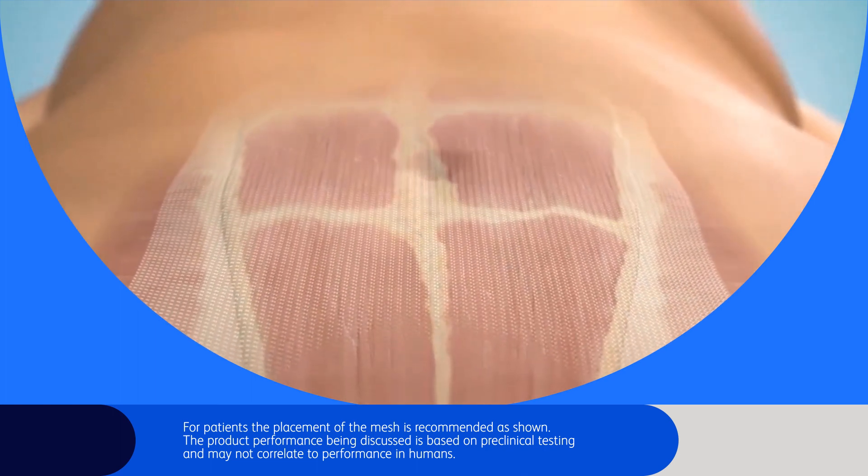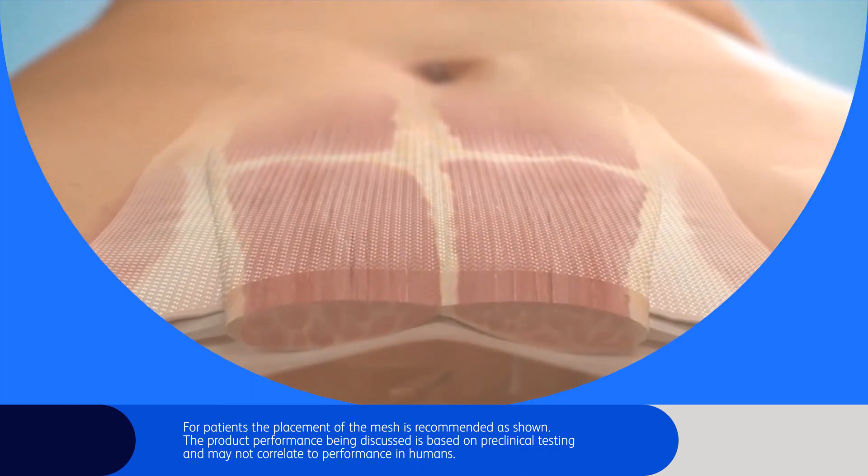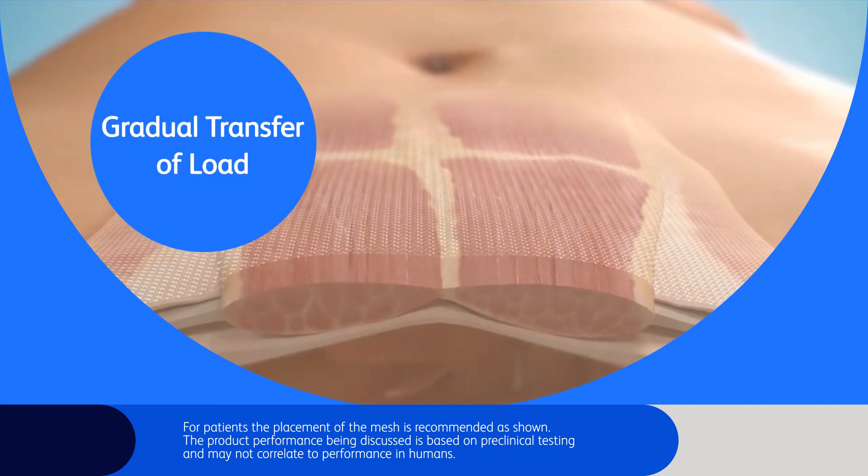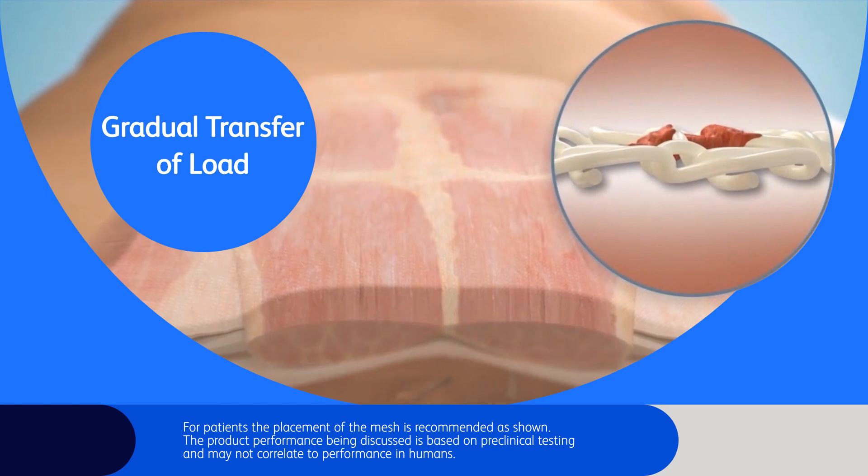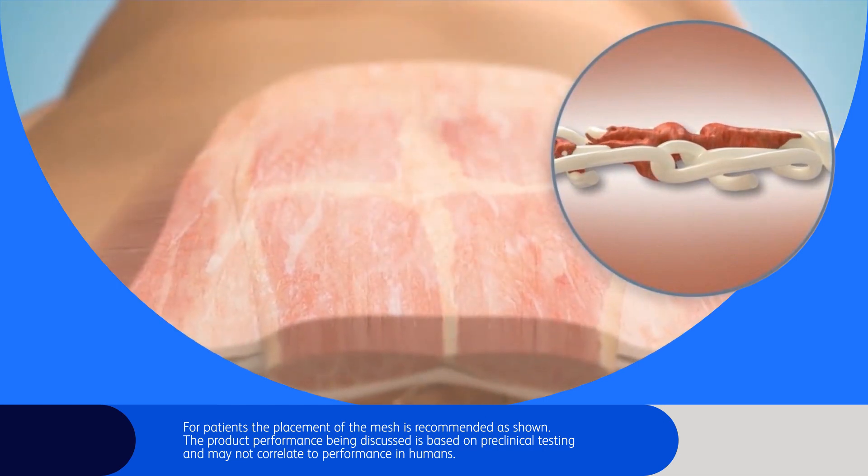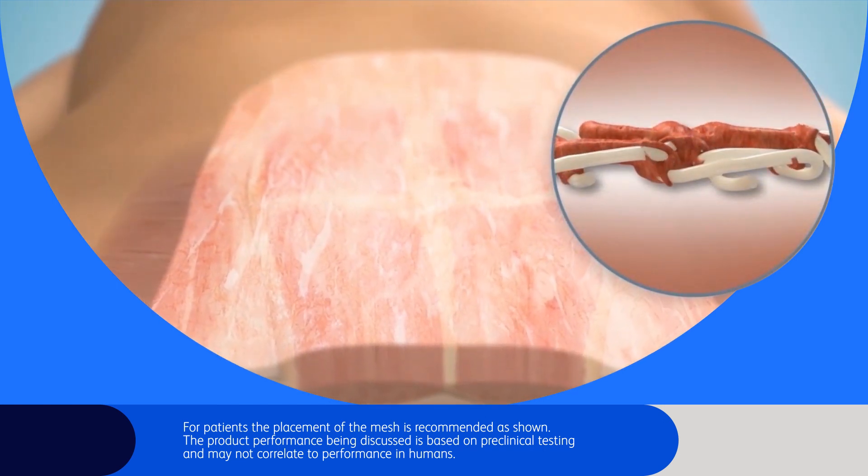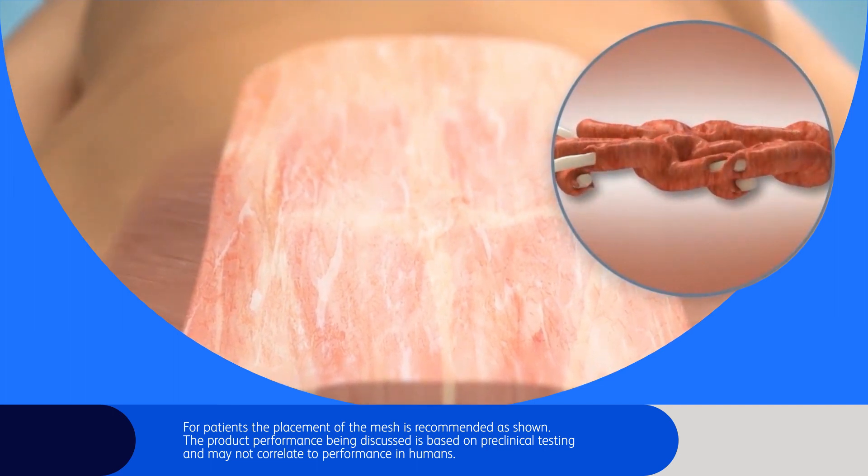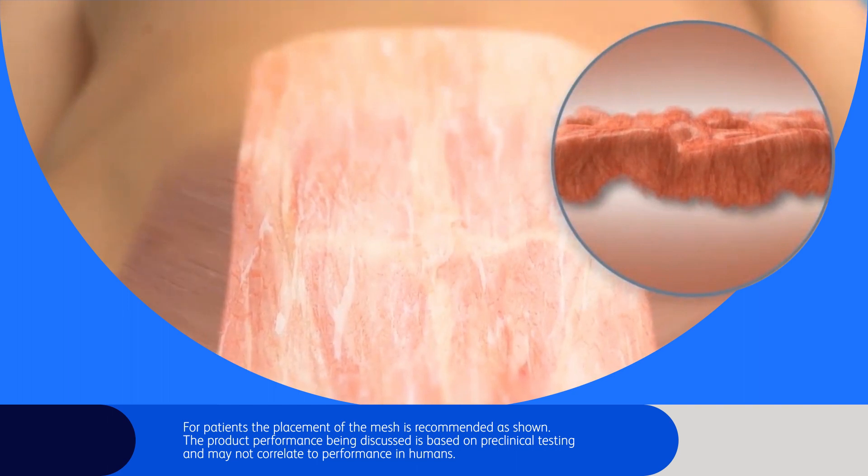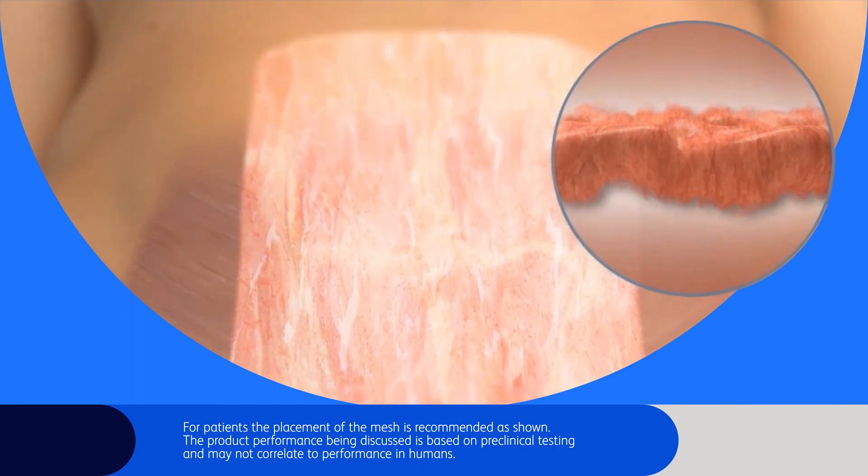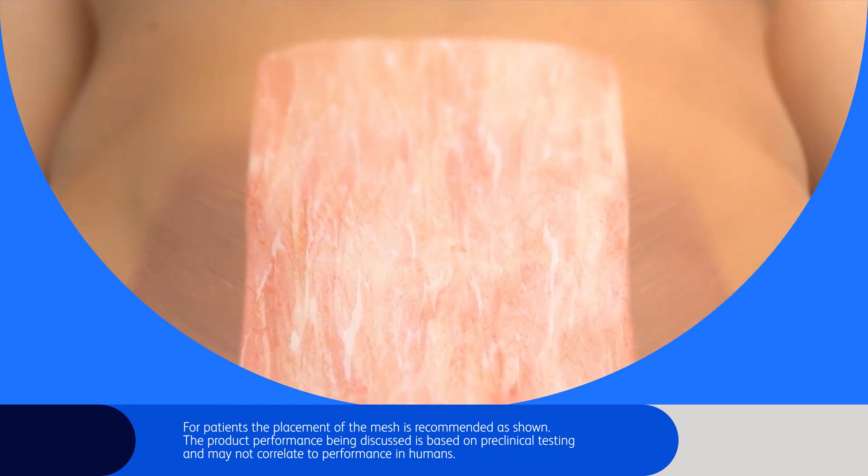As demonstrated in preclinical testing, as Phasix is resorbed, the load is slowly transferred to the host tissue. Due to the unique properties of the P4HB material, this predictable resorption allows for gradual transfer of load from the Phasix scaffold to the host tissue and results in the complete degradation of the Phasix material over time.